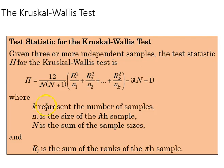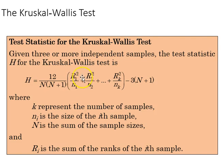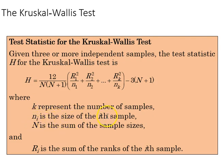The test statistic for Kruskal-Wallace is represented by H, calculated as 12 over capital N times (N plus one), multiplied by the sum of R_i squared over n_i for each of the samples, and then we subtract three times (N plus one). Here, k is the number of samples, n_i is the size of the i-th sample, capital N is the sum of all sample sizes (the pooled sample), and R_i is the sum of the ranks of the i-th sample.